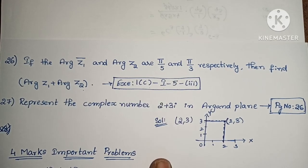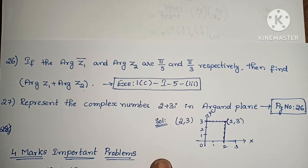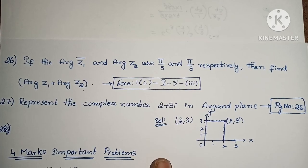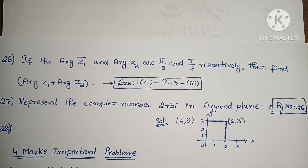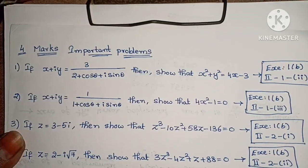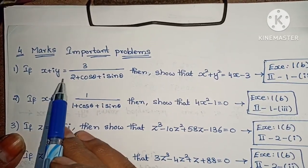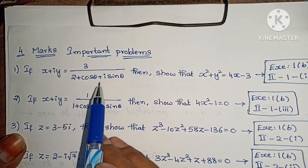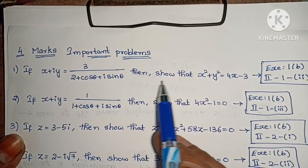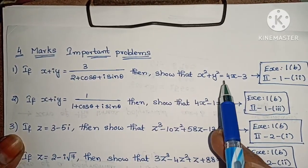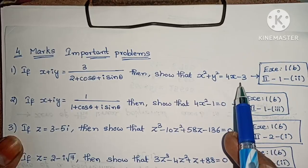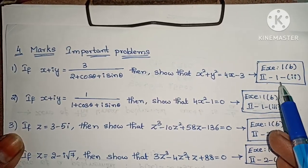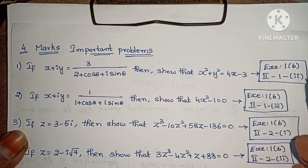Now, 4 marks important problems. First one: if x plus iy equals 3 / (2 + cos theta + i sin theta), then show that x squared plus y squared equals 4x minus 3. Exercise 1 below, second roman, first, second one.